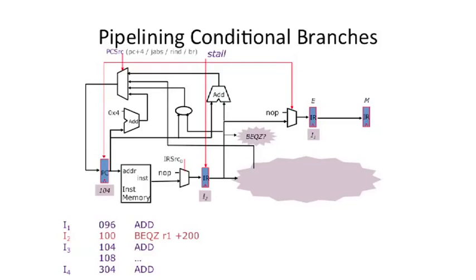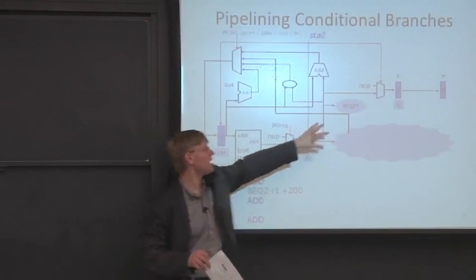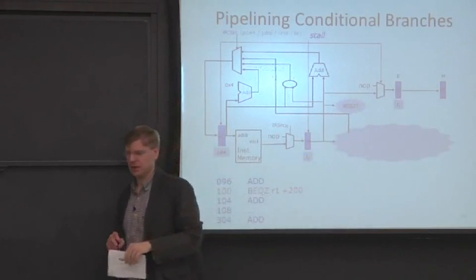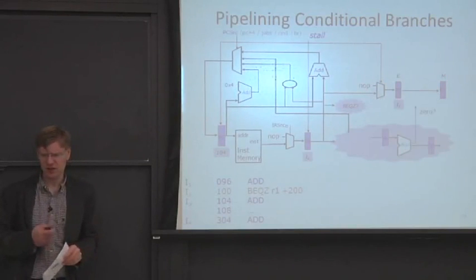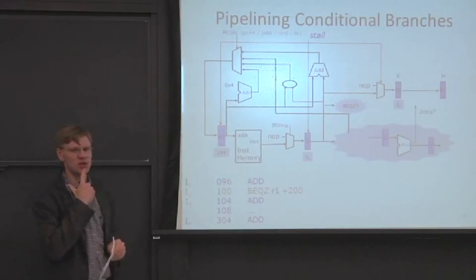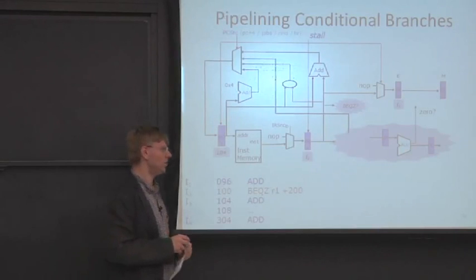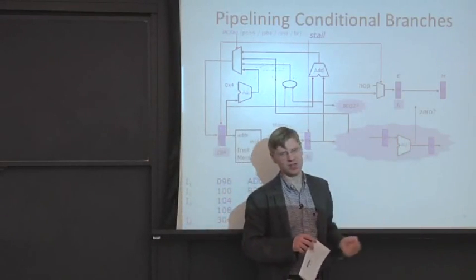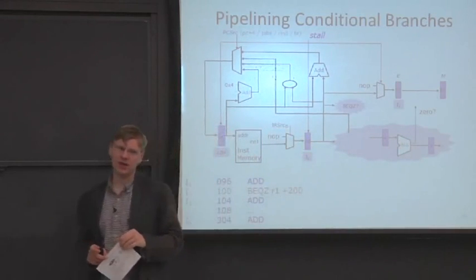Let's walk through this case. We have I1 as our first add, and we have the branch sitting at the decode stage. We have some decode logic asking: is this a branch? The next question is how do we compute whether this branch is taken or not — can we do this in the decode stage? Unfortunately, we need to do a comparison, and the hardware we want to use for the comparison is in the ALU.